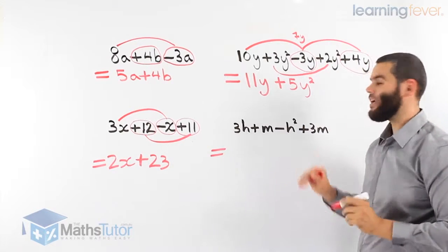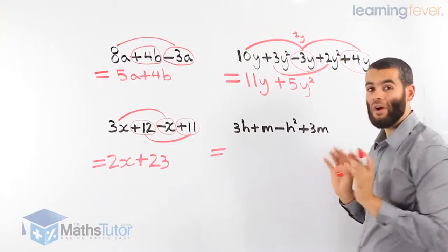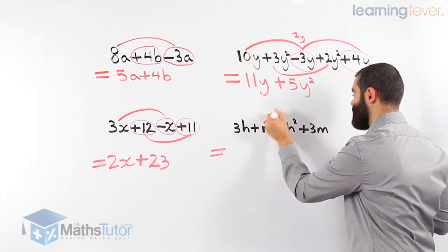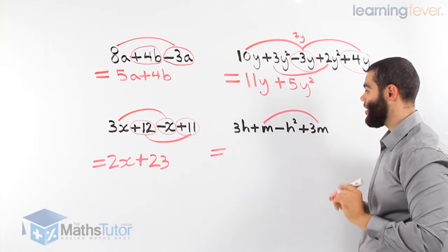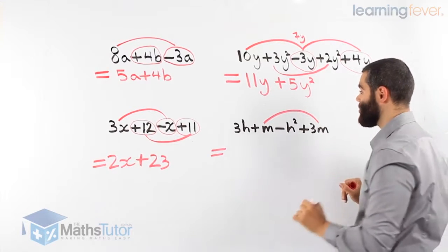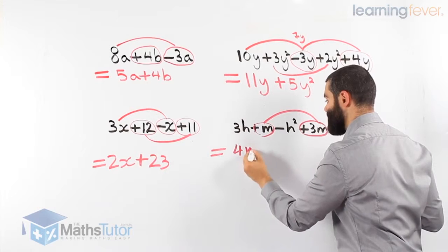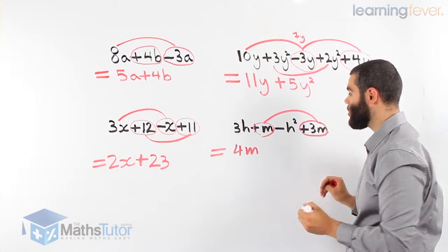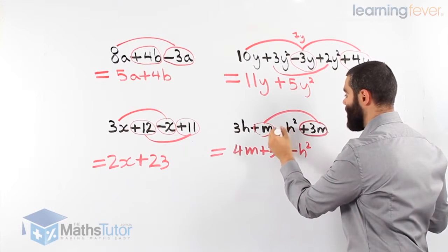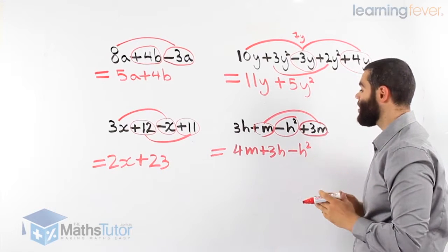Last one: 3h plus m minus h squared plus 3m. We look for like terms. Always look carefully, because it can be tricky. We notice there's an h, an m, an h squared, and an m. The only like terms are the m's. The h and h squared are totally different, so they are not like terms. So: m plus 3m is 4m. Is there anything else we can add or subtract? No. This is a positive 3h, so we put plus 3h minus h squared — because the minus belongs to h squared. We can't go any further, because there are no like terms.